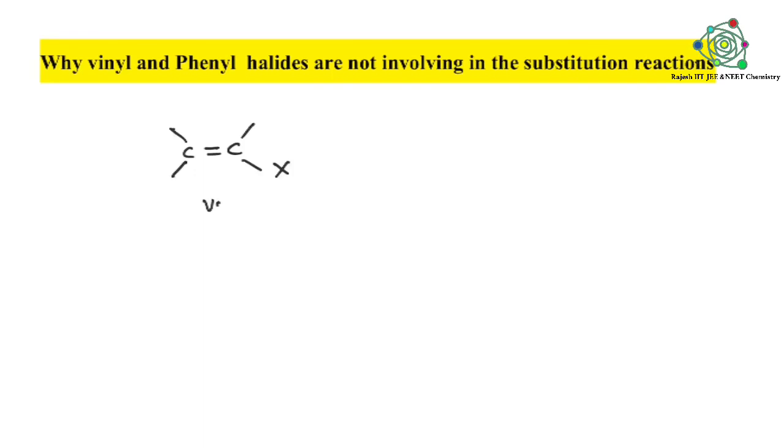You know very well substitution reactions are two types: SN1 and SN2 reactions. In these two SN1 and SN2, in these two reactions, this vinyl and phenyl halides are not reacting or not involving.